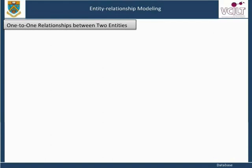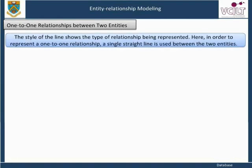Relationships between entities and attributes, between attributes, and between entities can be shown in a variety of diagrammatic formats. One common method is to use entity relationship diagrams, where each entity is represented by a box and each relationship is shown as a line. You may also come across diagrams which employ ellipses to represent the attributes belonging to each entity. The style of the line shows the type of relationship being represented. To represent a one-to-one relationship, a single straight line is used between the two entities.